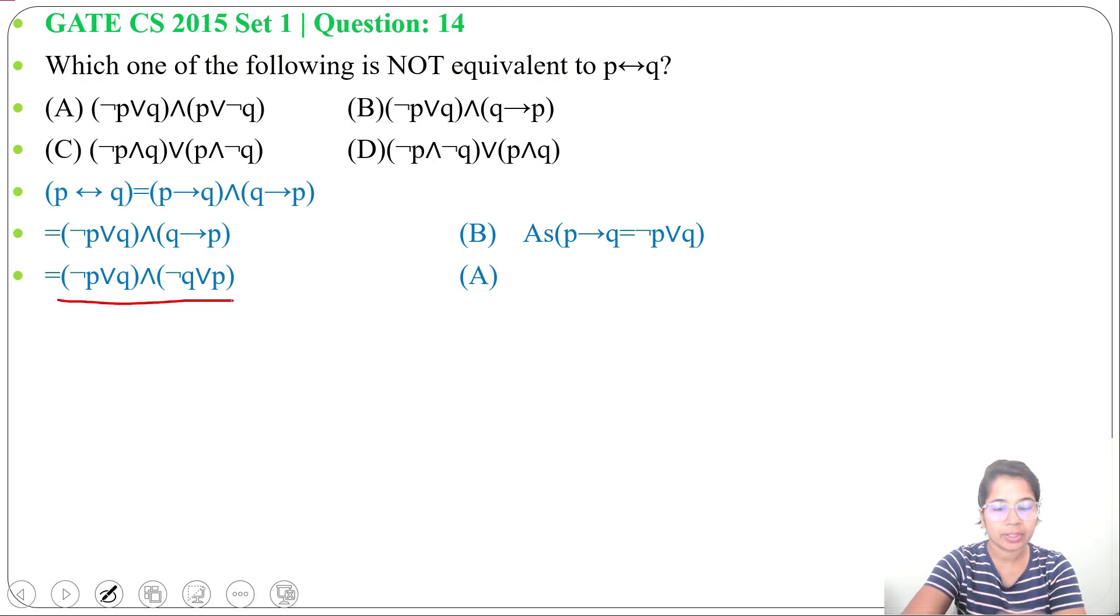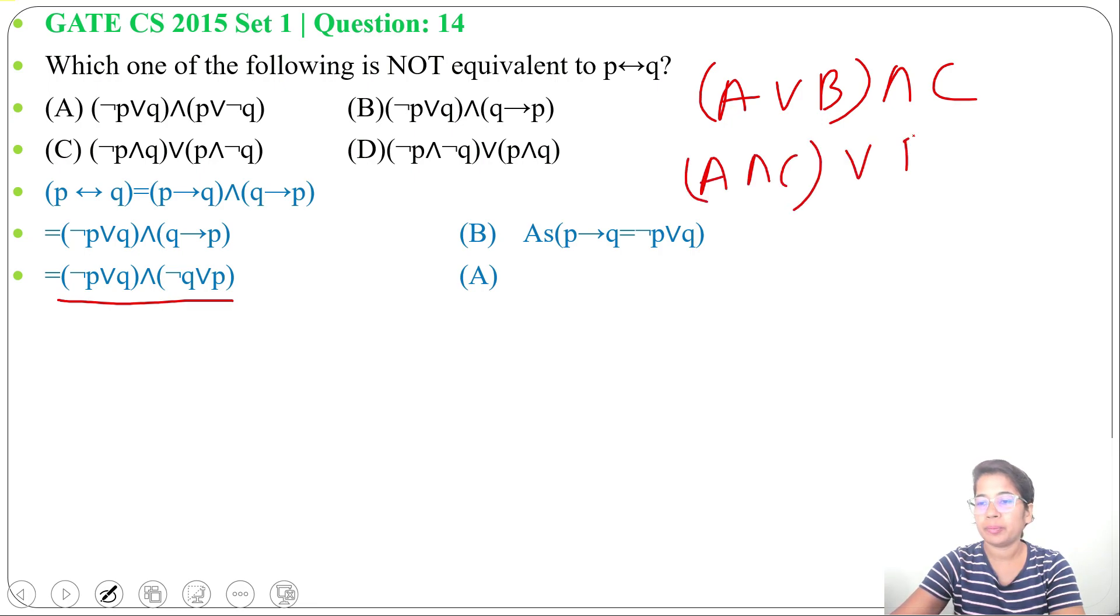Next we can apply distributive law here. If A or B and C is given, we can write as A and C or B and C. Let negation P as A, Q as B, and this whole as C.